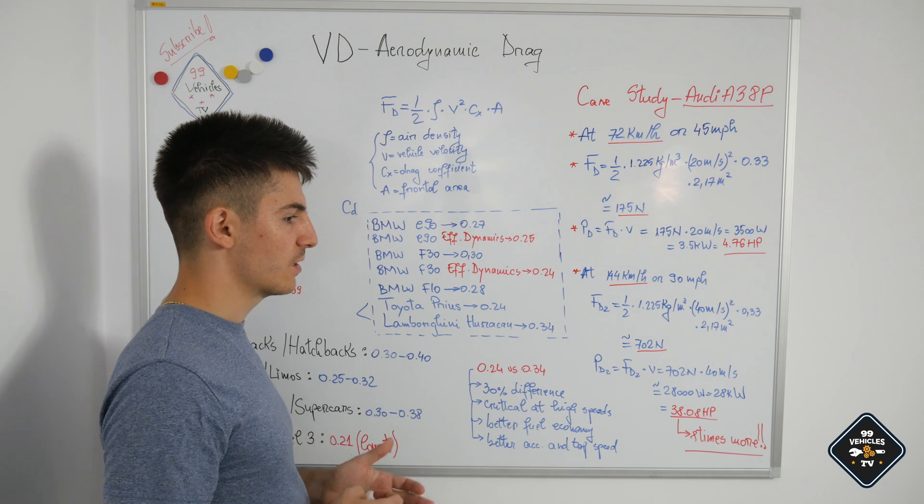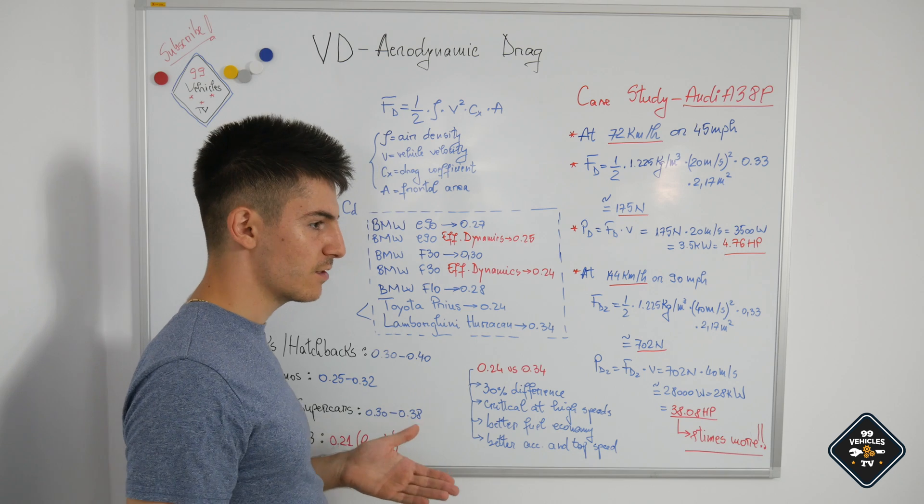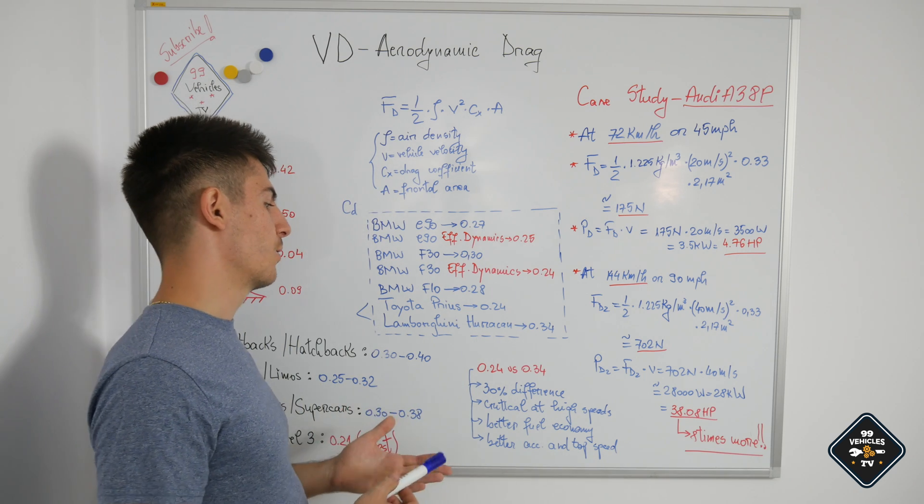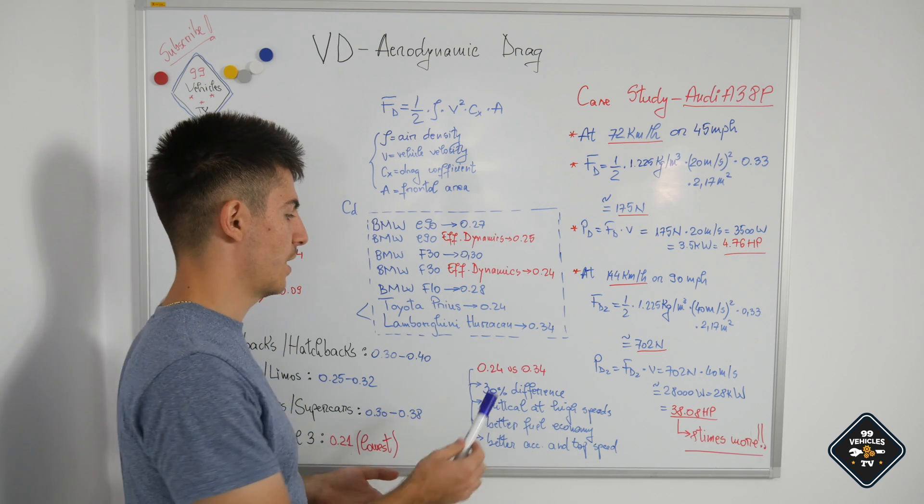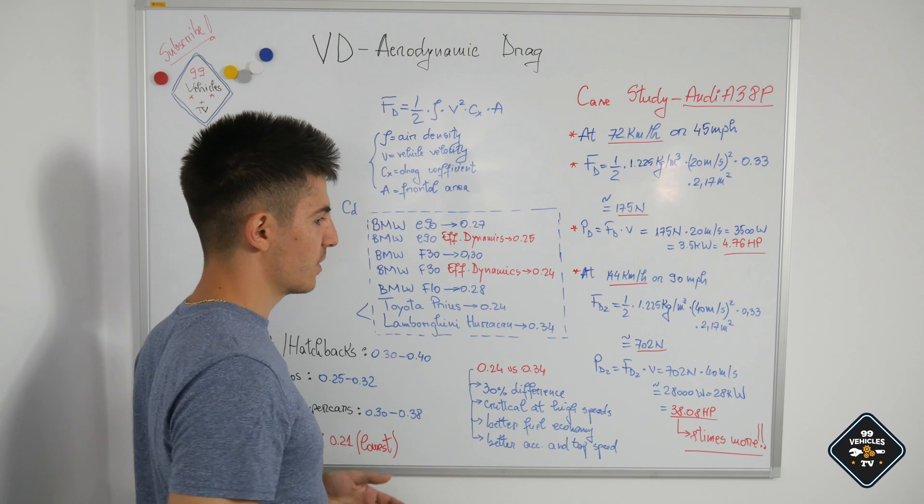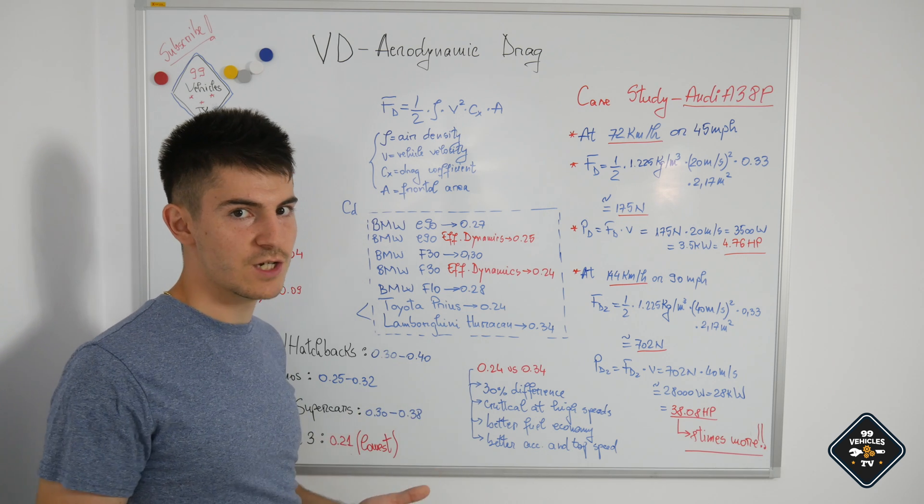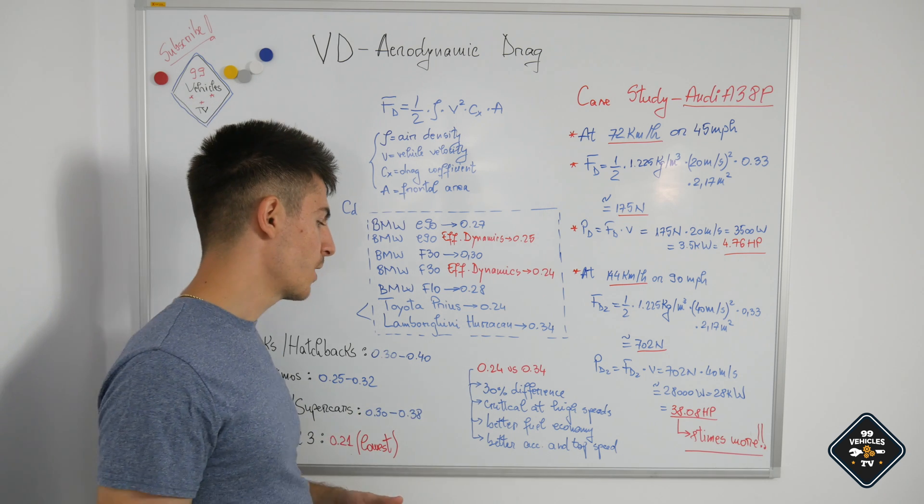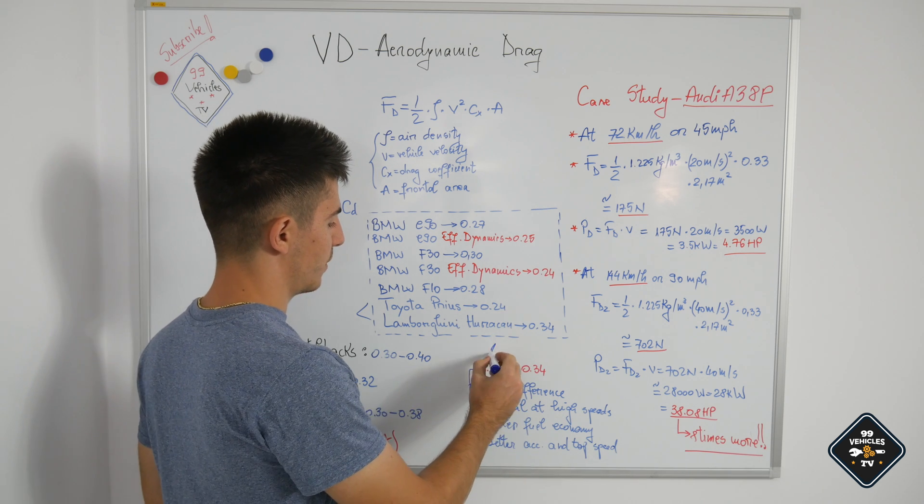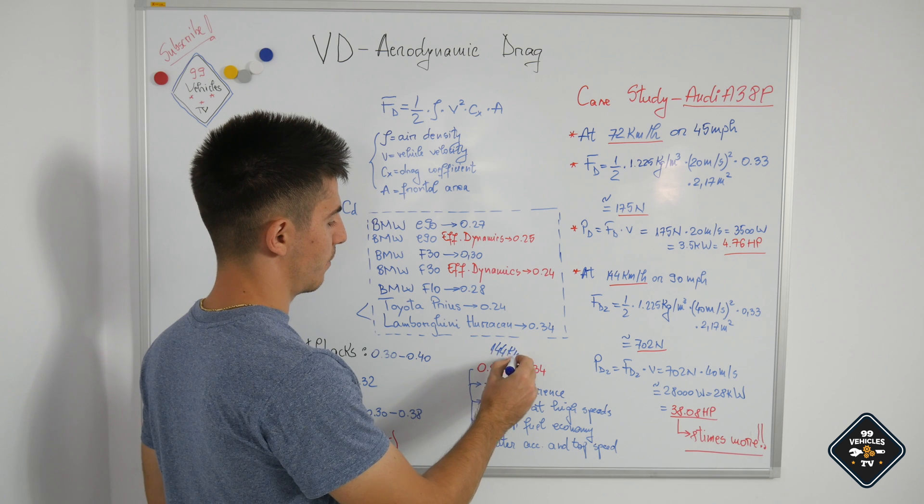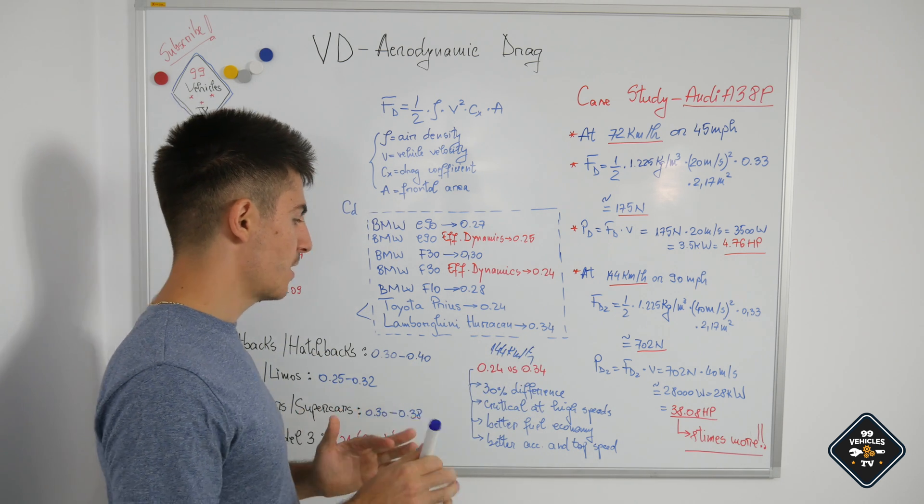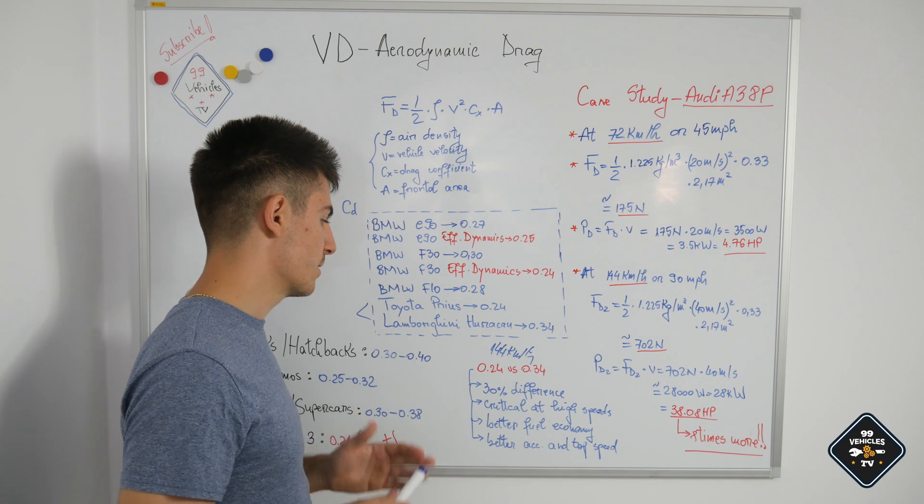The advantage of having a lower aerodynamic drag coefficient is that you can accelerate faster at higher speeds. If you have 140 kilometers per hour and you have two cars with the same power outputs and different drag coefficients, the one with the lower drag coefficient can accelerate faster and can reach a higher top speed. Also running at the same speed, let's say 144 kilometers per hour, and we have two different cars having the same power outputs, the same engines, the same transmissions...